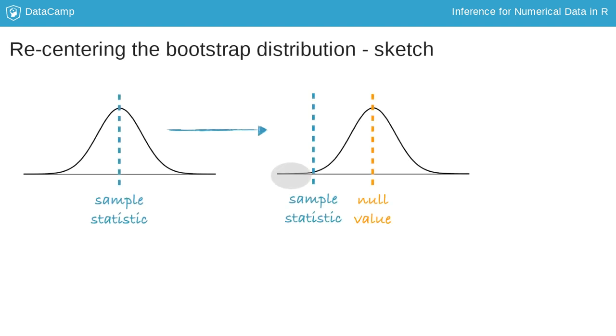We start with our bootstrap distribution, which is always centered at the observed sample statistic. We then shift this distribution so the center is at the null value, and calculate the p-value as a proportion of simulations that yield bootstrap statistics that are at least as extreme as the observed sample statistic.